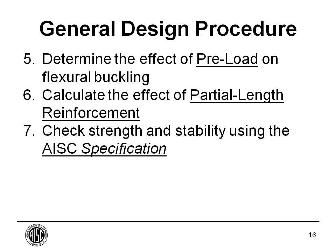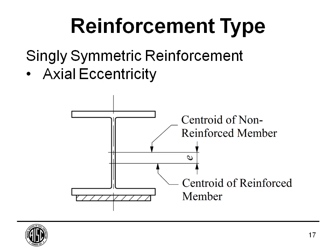Step five is to determine the effect of preload on the flexural buckling. In most cases, you're not going to be able to remove 100% of the load off of a column before you add the reinforcement. In a lot of cases — things I work on in power plants — you've got some pretty heavy equipment that absolutely cannot be removed without shutting the plant down for months. Step six is to determine the effect of partial length reinforcement. Step seven is to check the strength and stability using the AISC specification requirements — in our case, we're only going to be looking at flexural buckling.